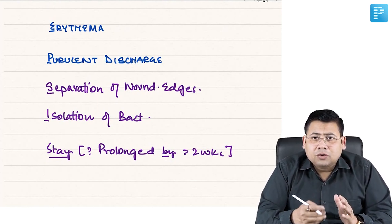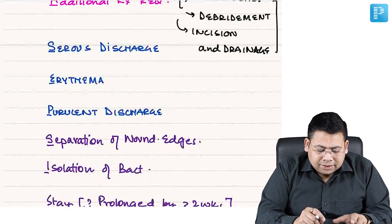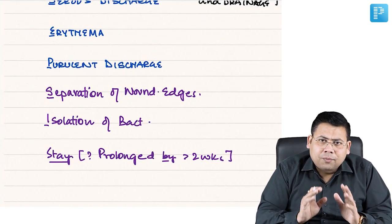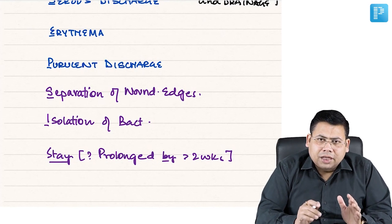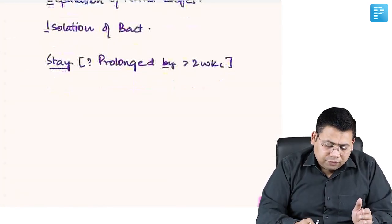So all these points - A, S, E, P, S, I, S - ASEPSIS, these are actually a point-based calculation system that we do for them. So we have completed the chapter of wounds.